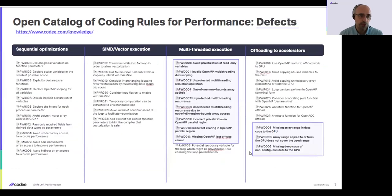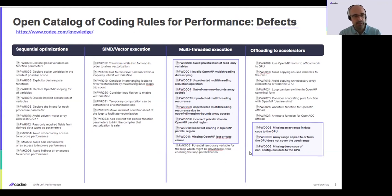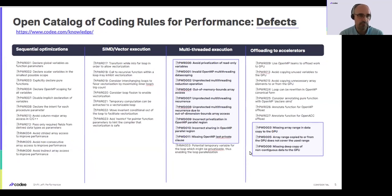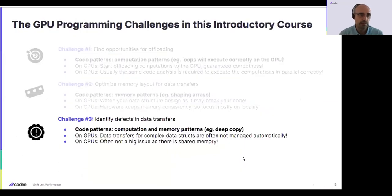Currently there are 11 defects implemented in the software. You can navigate them using the six stages of the performance optimization roadmap: three sequential stages — optimizing sequential instructions, simplifying control flow, and optimizing memory usage — and three parallelism stages: vectorization, multi-threading, and offloading. In version 1.3.1, three of the 11 defects correspond to offloading to GPUs, particularly data transfers, and the remaining eight correspond to incorrect multi-threaded coding using OpenMP.